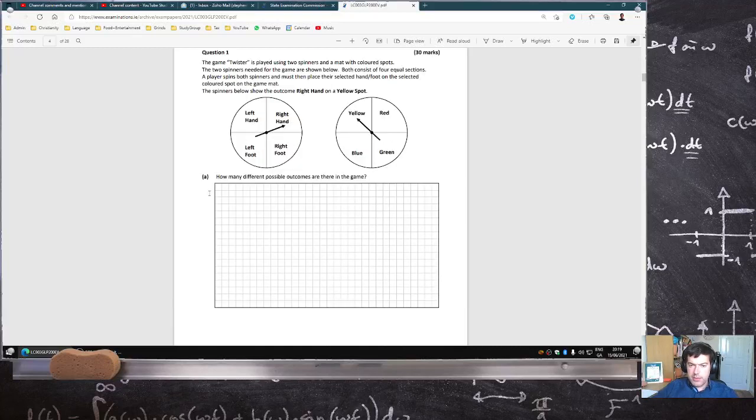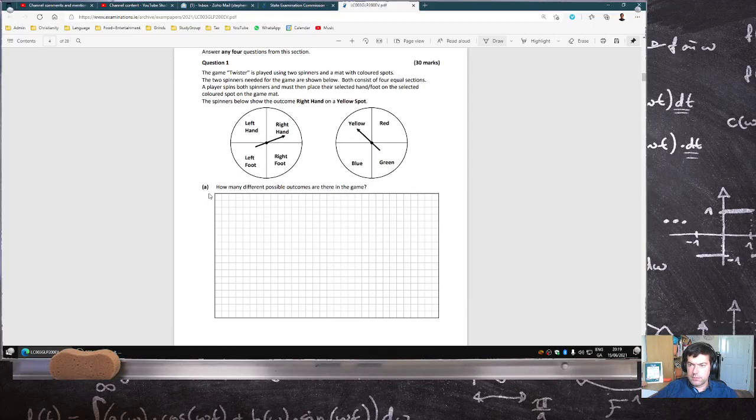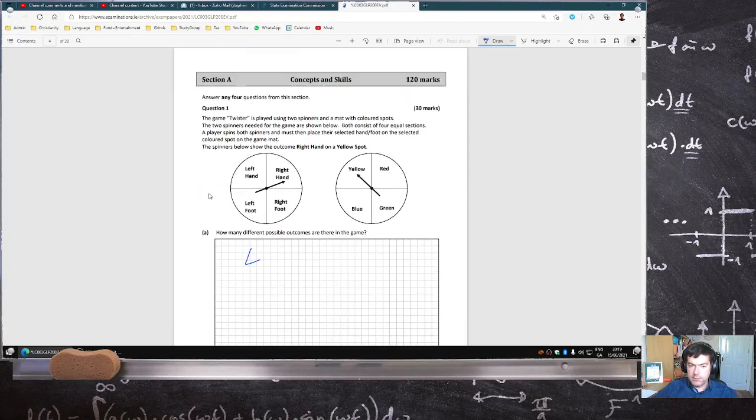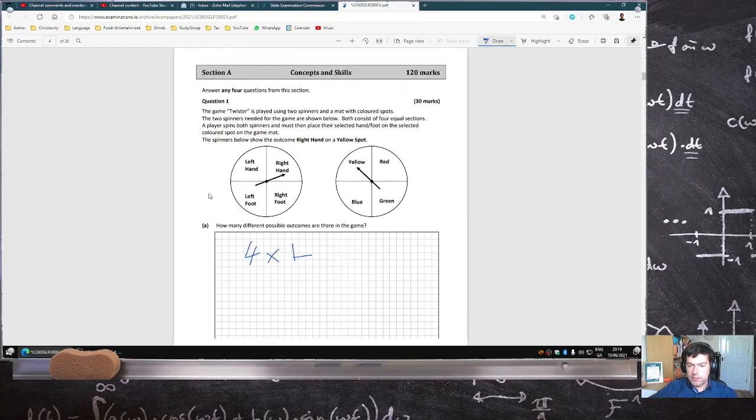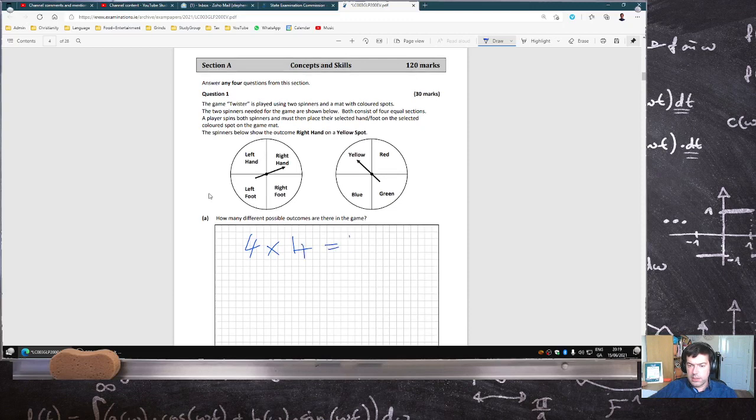How many different possible outcomes are there? 4 times 4 is 16.